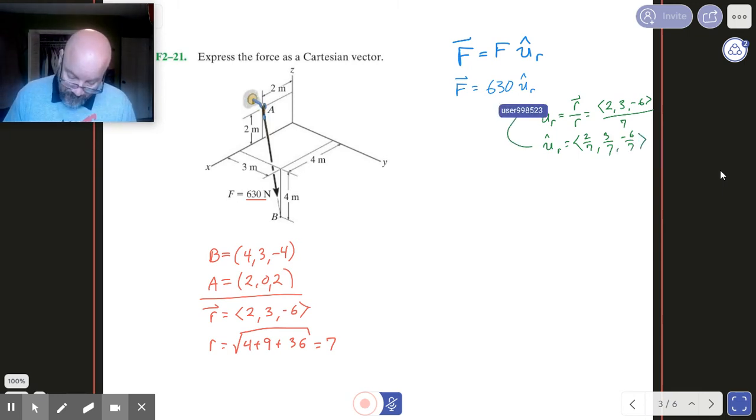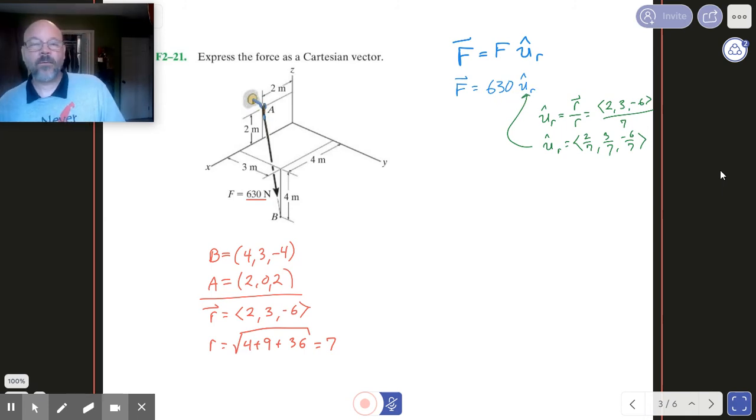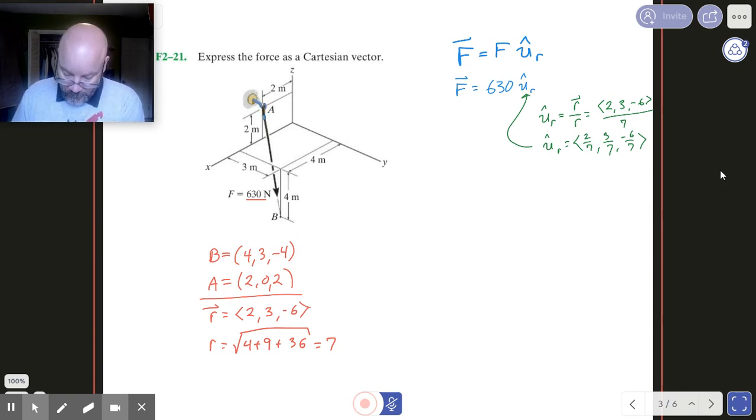All I got to do now is stick that up there with this guy and see what happens. So F then, we're going to have 630 onto 2/7, 3/7, and minus 6/7.